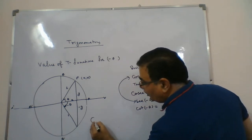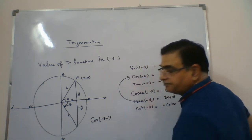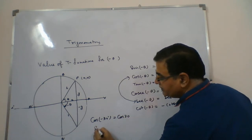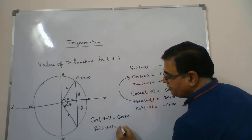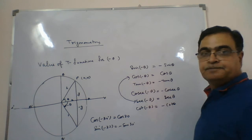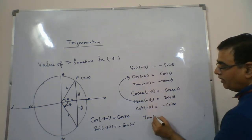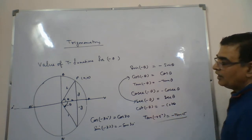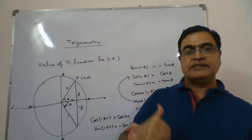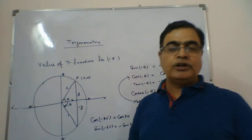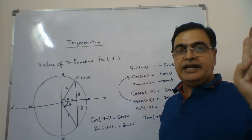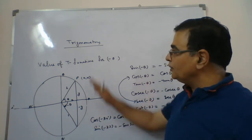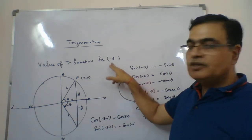So only in cos and sec will the minus be removed; for the remaining four functions, the minus goes out. For example: cos of minus 30° equals cos 30°; sin of minus 30° equals minus sin 30°; tan of minus 45° equals minus tan 45°. Remember: minus is removed in cos and sec, and for the other four it comes out as a negative sign.